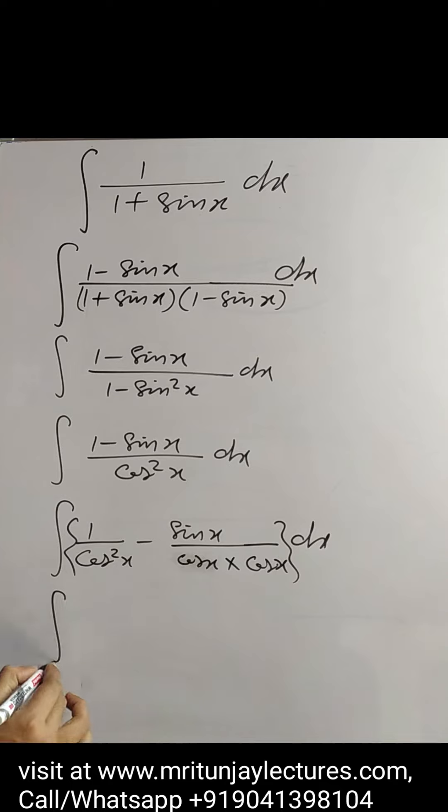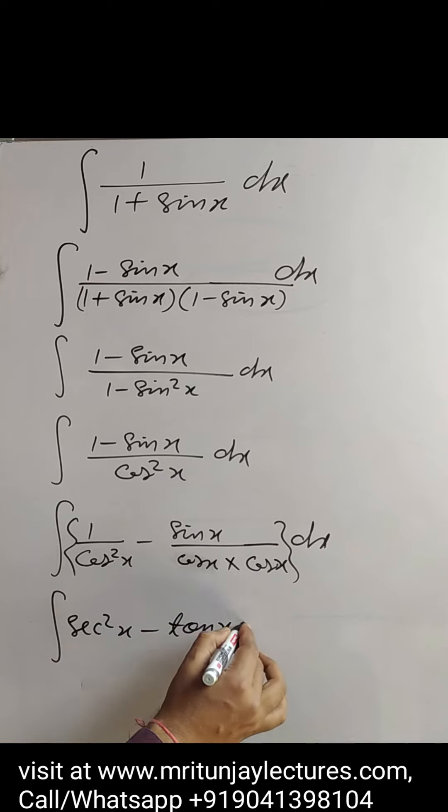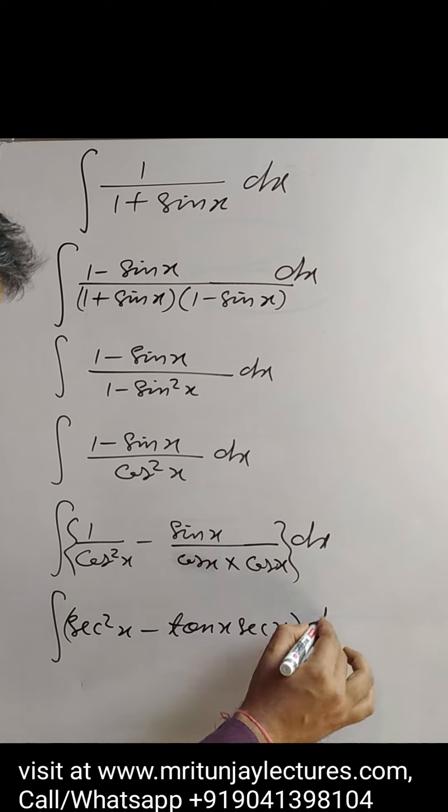After that, if you see very carefully, that one is cosec square x and that one is tan x into cosec x dx.